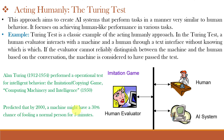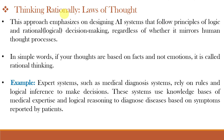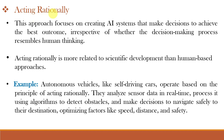Alan Turing predicted that by the year 2000, machines might have a 30% chance of fooling a normal person for 5 minutes, and today we have many such machines that act like humans. The next approach is thinking rationally, which follows the laws of thought. Here the AI system follows logical decision making and ignores the human thought process. For example, if a friend says he saw a ghost and you believe him without thinking logically, that is human thought process. But if you think rationally — that there is no ghost — your thoughts are based on facts and not emotions. Real-life systems such as medical diagnosis systems rely on rules and logical inference, using knowledge bases of medical expertise to diagnose diseases based on patient symptoms.